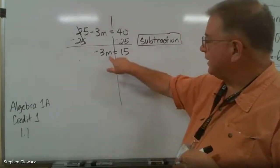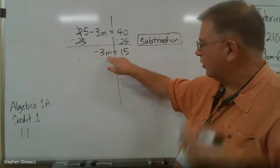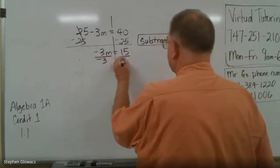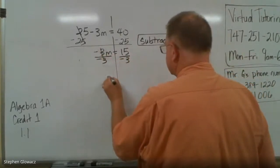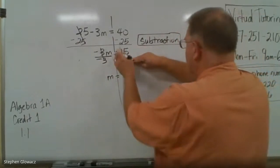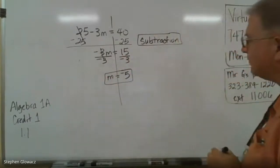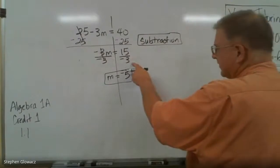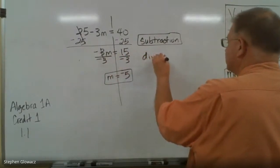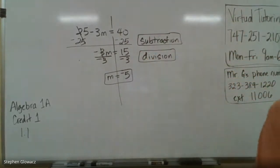For step 2, m is being multiplied by negative 3. There's no fraction here, so the opposite of multiplying is to divide. We're going to divide both sides by negative 3. 15 divided by 3 is 5, and a positive divided by a negative is a negative, so our answer is negative 5. The justification for the second step — we divided by negative 3 — so it's the division property of equality. We write in the word 'division.'